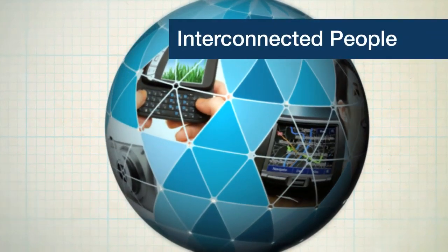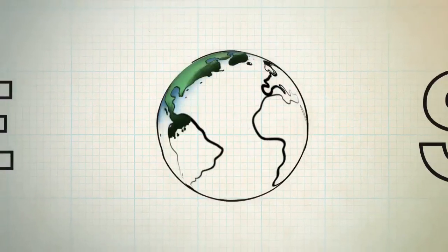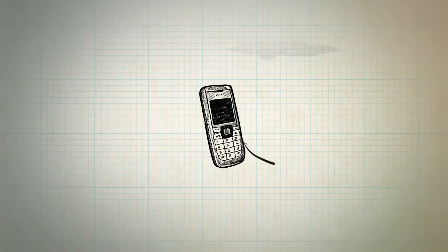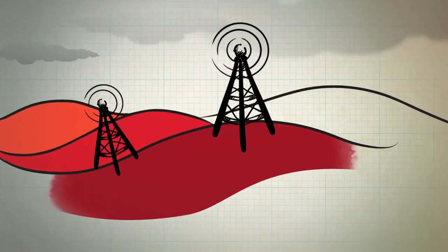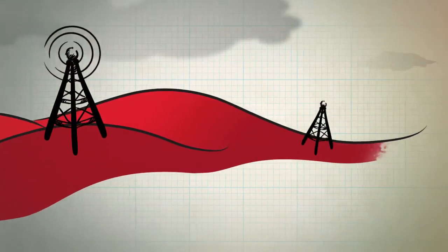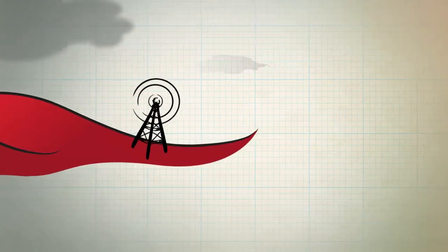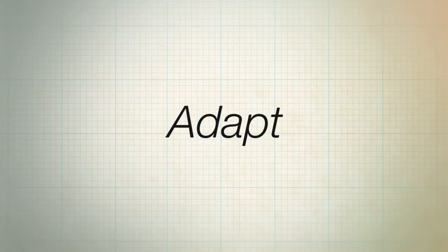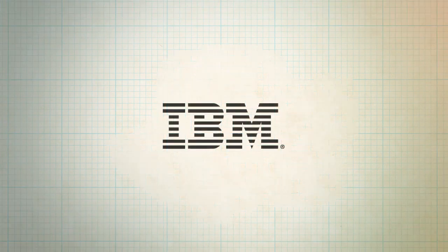But this mobile internet explosion is also placing a huge strain on the system, from the devices themselves to the underlying network infrastructure. In order to continue to move forward into this new world, all aspects of the mobile internet must be able to grow, evolve, and adapt. That is where IBM is making a difference, developing and manufacturing microelectronics technology to enable a smarter planet.